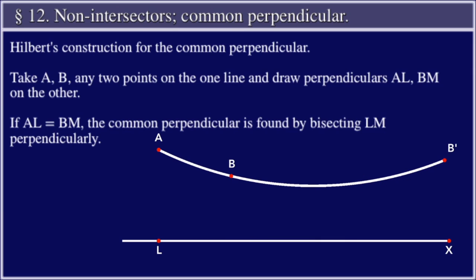Hilbert's Construction for the Common Perpendicular. Take A and B any two points on the line, figure 22, and draw perpendiculars AL and BM on the other. If AL is equal to BM, the common perpendicular is found by bisecting LM perpendicularly.